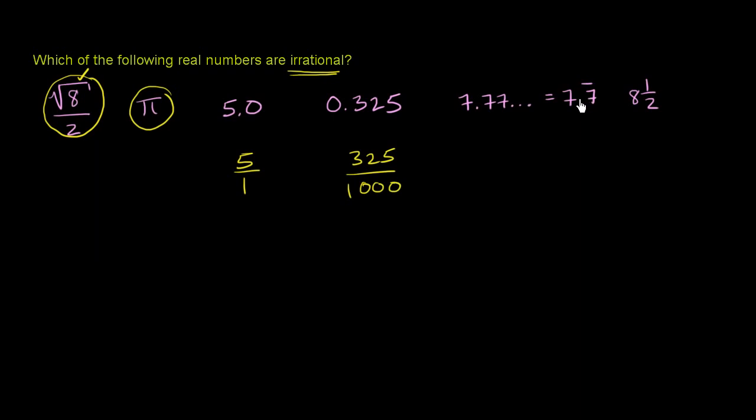Now if you have a repeating decimal, in other videos we'll actually convert them into fractions. But a repeating decimal can be represented as a ratio of two integers. Just as 1/3 is equal to 0.333 on and on and on. Or I could say 3 repeating.